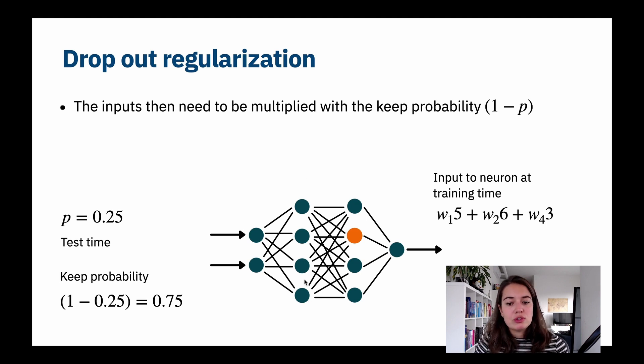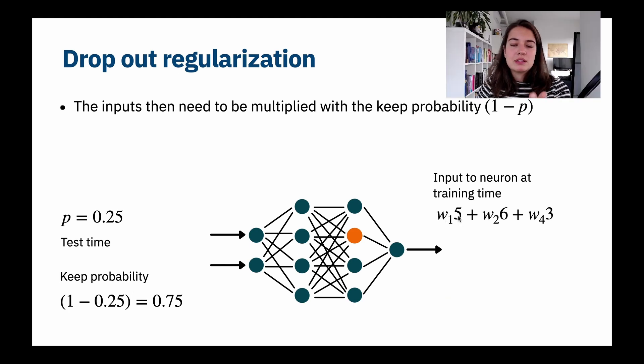Sometimes two of them will be missing, sometimes none of them will be missing, but on average we will get three inputs. How we can show that is we'll have some weight times some input, some weight times some input, some weight times some input.